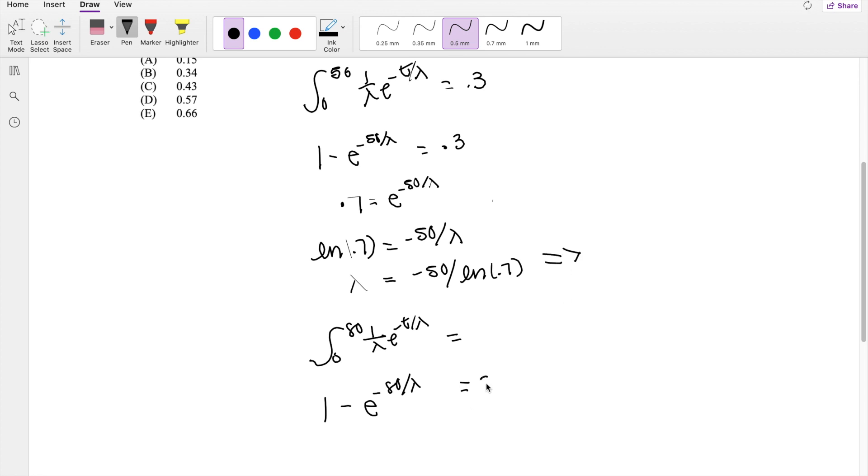And what is this equal to? So lambda, negative 50 divided by natural log of 0.7, is equal to 140.183.